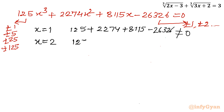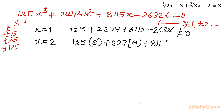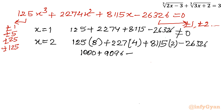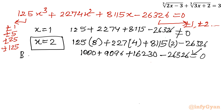Let me try x = 2. Computing: 125×8 = 1000; 2274×4 = 9096; 8115×2 = 16230. Adding these together gives 26326, which matches the constant term. So the equation equals 0, confirming that x = 2 is our base solution.